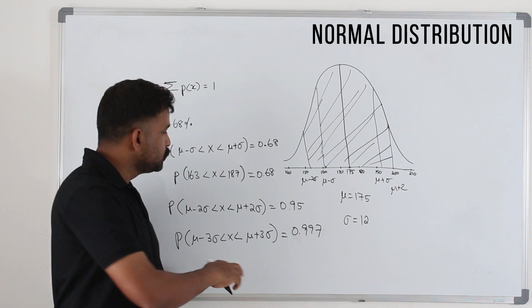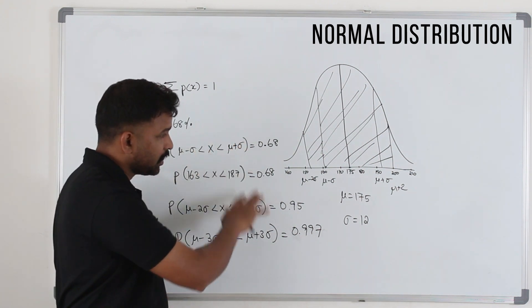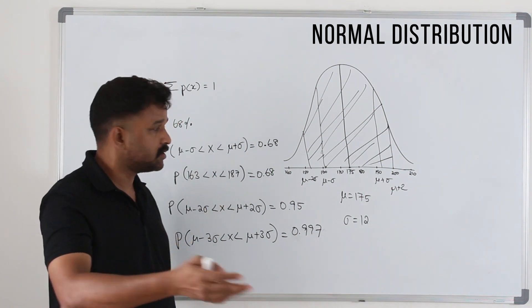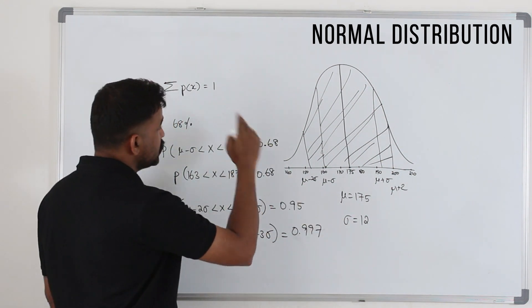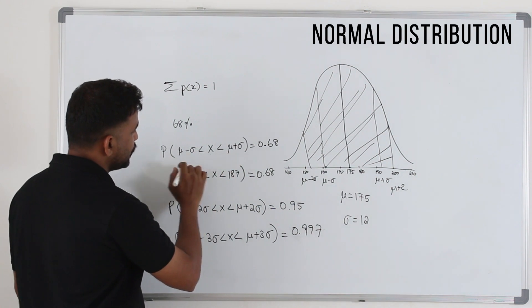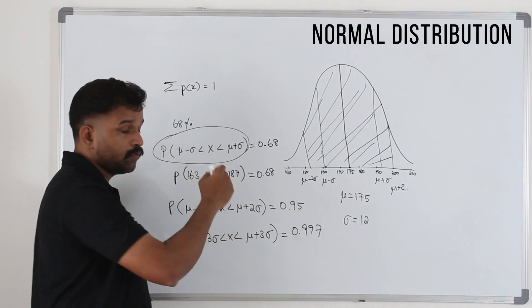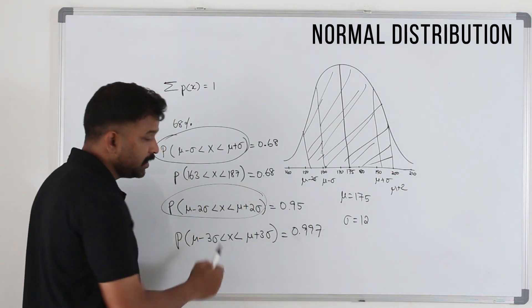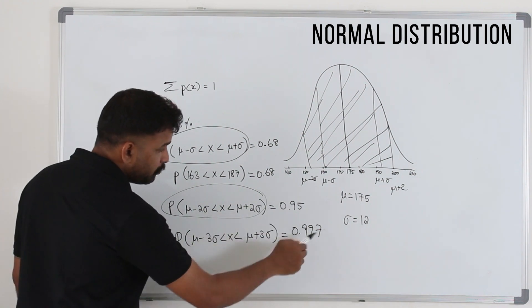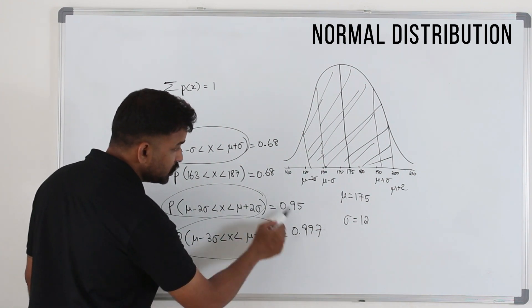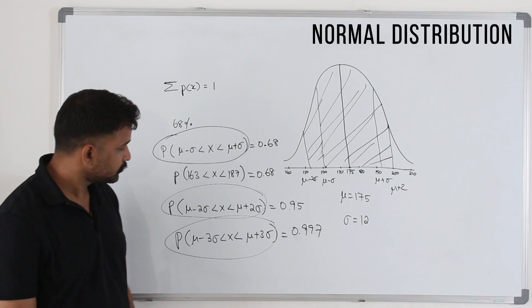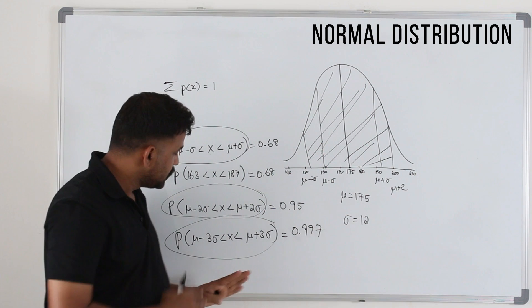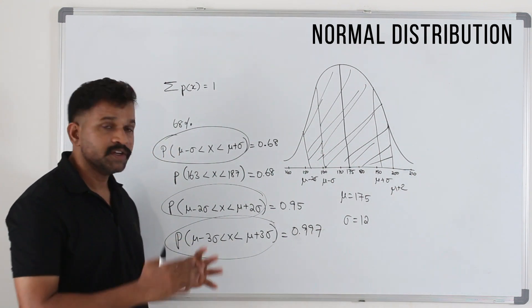You won't be mostly using these in your past paper questions, but you still need to understand this. I'm going to repeat again: 68 percent of the data lies within one standard deviation away from the mean, 95 percent lies two standard deviations away from the mean, 99.7 percent—these percentages are very important—99.7 percent of data, meaning almost all the data, lies between three standard deviations away from the mean.